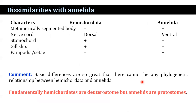However, there are many differences. Annelids have a metamerically segmented body, whereas Hemichordata do not. The nerve cord is dorsal in Hemichordata but ventral in annelids. Stomochord is present in Hemichordata but absent in annelids. Gill slits are present in Hemichordata but absent in annelids. Parapodia and setae are well-developed characteristic features of annelids but absent in Hemichordata. These basic differences are so great that there can be no phylogenetic relationship between Hemichordata and annelids. Fundamentally, Hemichordata are deuterostomes, but annelids are protostomes.